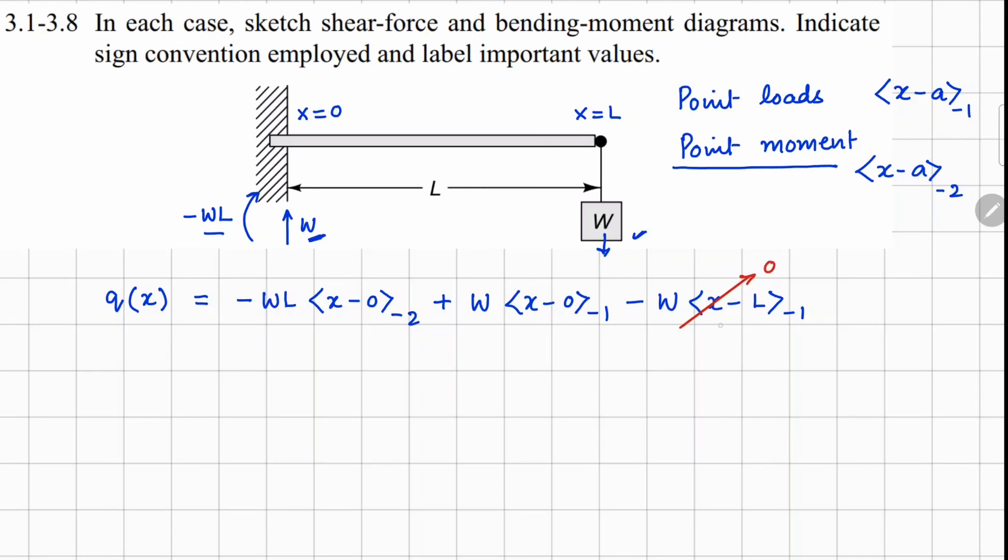Now this function here will never be giving you a nonzero value because (x minus L) for this beam will always be negative, so you can ignore that. After Q, we can calculate your shear force, so from here to here you can do integration of Q with negative sign.